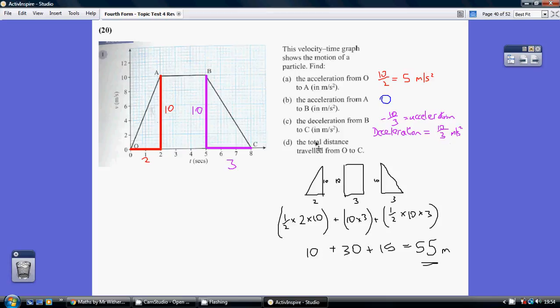Now, for part D, we want the total distance from O to C. So that's the total area under the graph comprising a triangle, a rectangle, and a triangle.